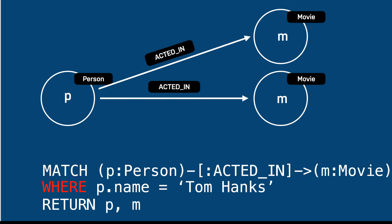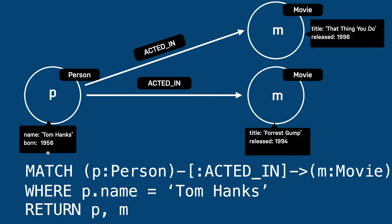You can specify a filtering criteria for your queries against the graph. Here we use the WHERE clause to specify that we want to return the node with the name property of Tom Hanks. Suppose this graph had two movies that Tom Hanks acted in. This query would retrieve the Tom Hanks node and then traverse the ACTED_IN relationships to return the two movie nodes.